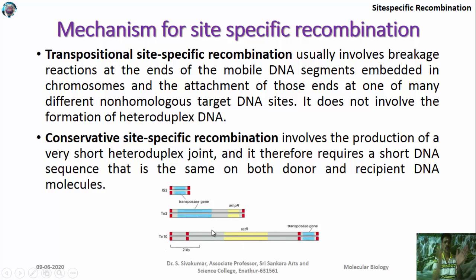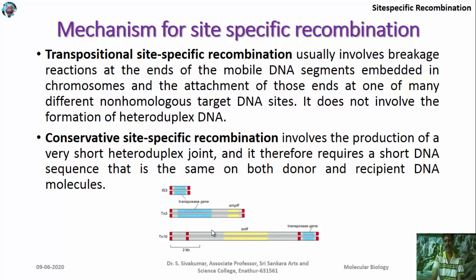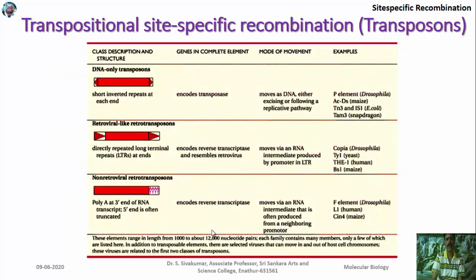When you move Tn10 from one organism, or from one location of the chromosome to another location, or from one organism to another, it provides resistance. That is the significance of this recombination process — the microbes will get additional characters.